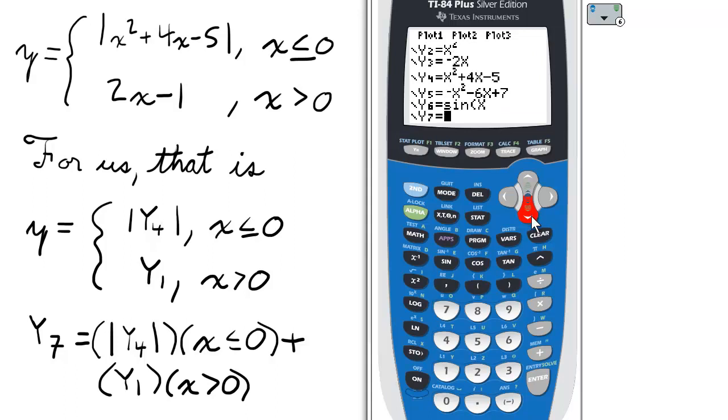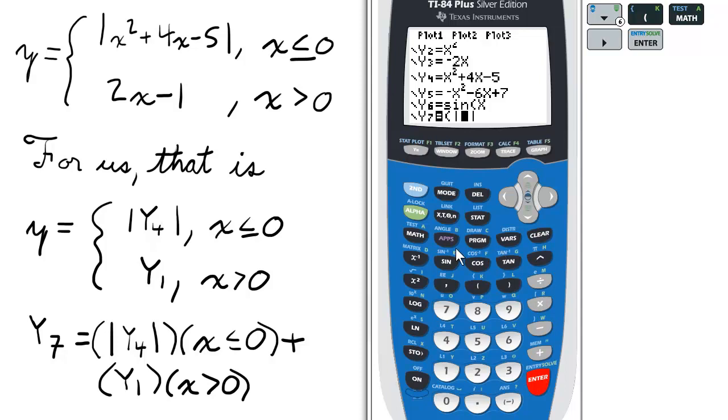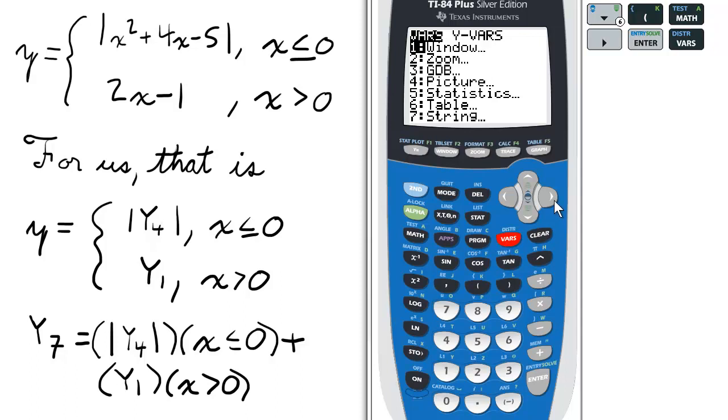So for y7, open parentheses, get the absolute value symbol. And then to define this as y4, I have to go to the vars key, select y vars, and then function is number 1, and then 4 for the y4.